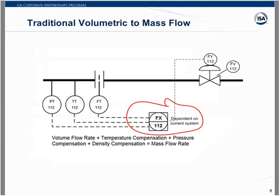The traditional volumetric to mass flow measurement was rather clumsy and difficult. If you look at the FX112 area, it can be any system you might have in place. We had to take a pressure transmitter, a temperature transmitter, and a flow transmitter that measured differential pressure, then send it to a standalone controller, PLC, or distributed control system. We had to first calculate volume flow rate, then do temperature and pressure compensation, correct the density for those changes, and finally multiply volumetric flow rate times density to arrive at mass flow rate.